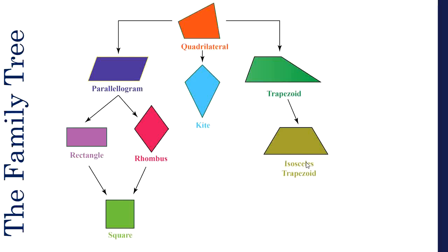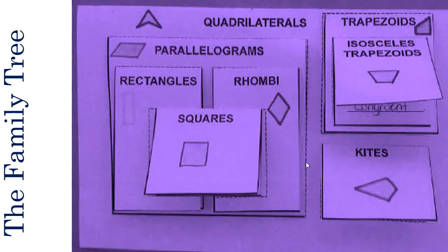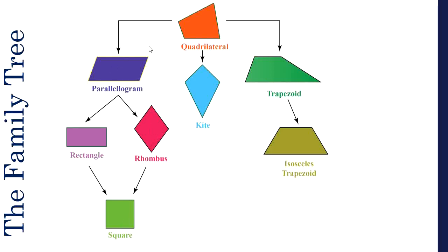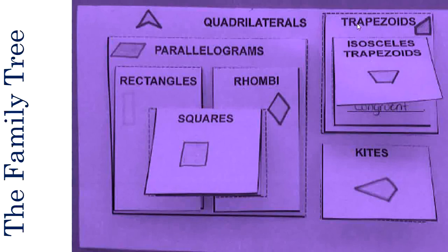This layout is a better way of explaining what this foldable is trying to do. It's the same family tree but a little different — whatever is glued on top of each other will also have those same properties. So a square is glued on top of a rhombus, rectangles, parallelograms, and quadrilaterals. We have three categories: parallelograms, trapezoids, and kites, and we're going to work from left to right through this foldable.